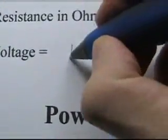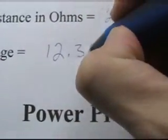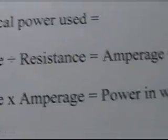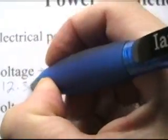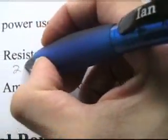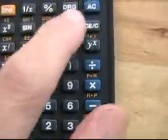So electrical power used, we take the voltage which is 12.35 and the resistance which is 22.8, so we take the voltage, plug that in here, turn this on.